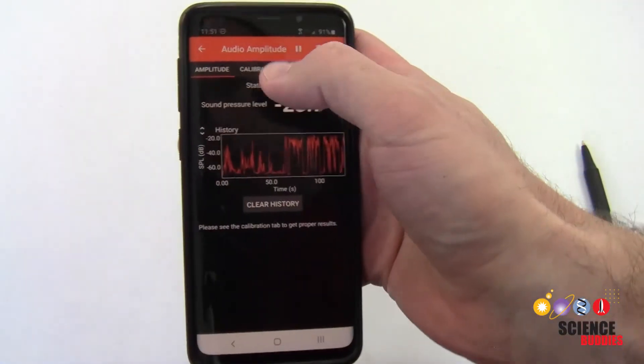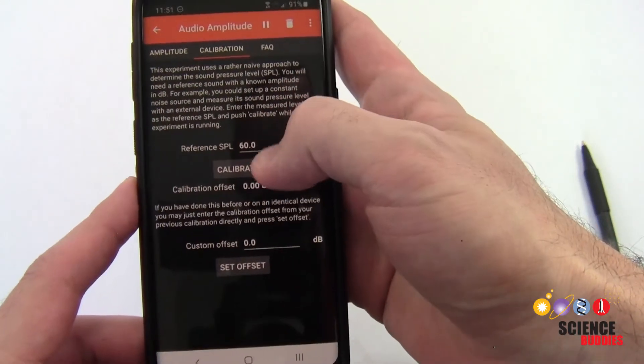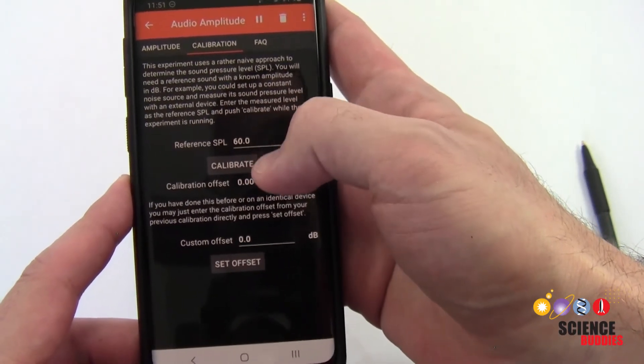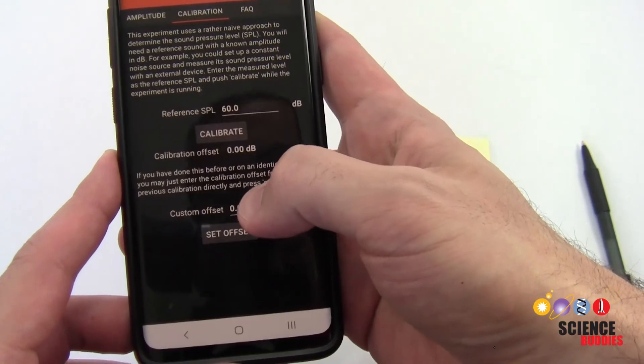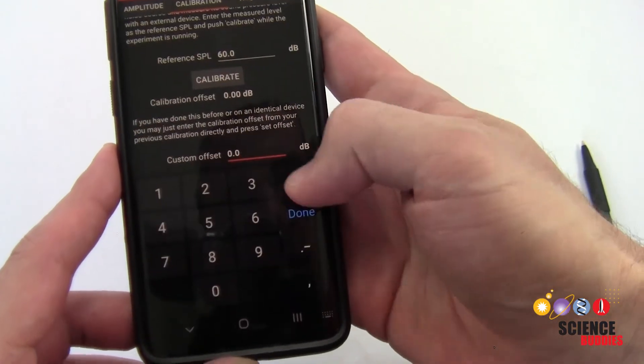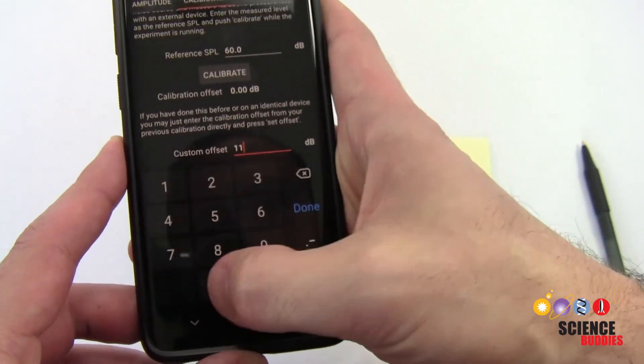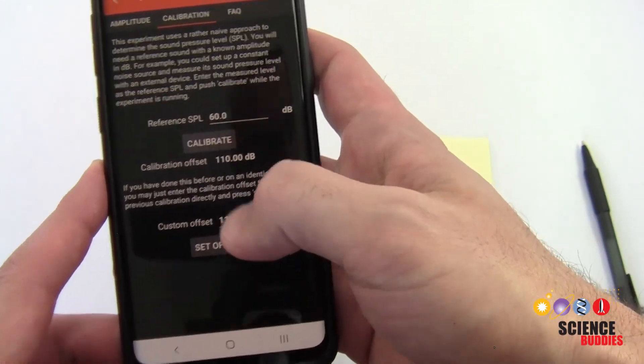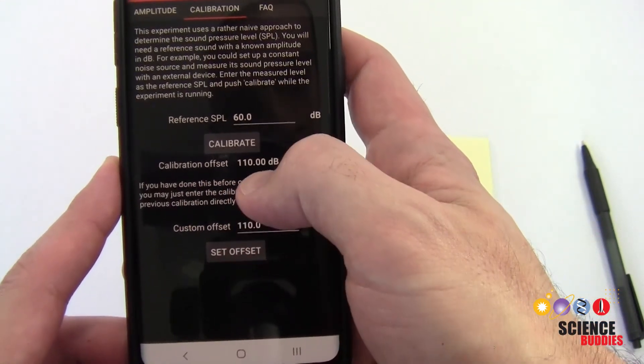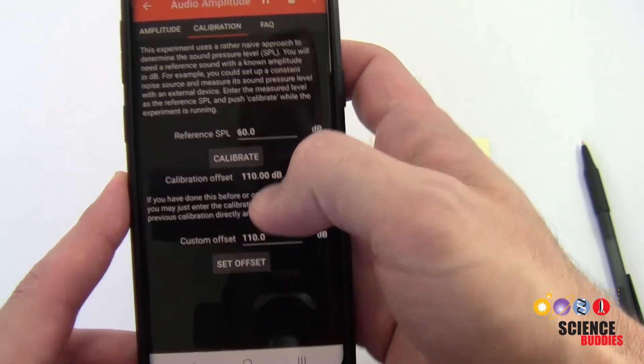I can head over to the calibration app in Firefox, and rather than using this automatic calibration button, I can go down here to a custom offset and set that to 110. I then press the set offset button, and you see that the calibration offset up here has updated to 110 dB.